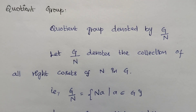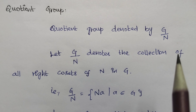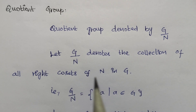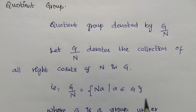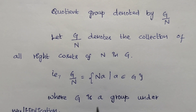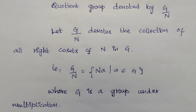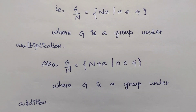Question group, denoted by G/N. Let G/N denote the collection of all right cosets of N in G. That is, G/N equals the set of Na such that a belongs to G, where G is a group under multiplication. Also, G/N equals the set of N+a such that a belongs to G, where G is a group under addition.